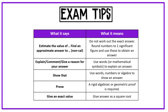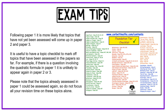If it says 'give an exact value', give the answer as a square root. Our final exam tip is that following paper 1, topics not yet assessed are more likely to come up in papers 2 and 3. It is therefore useful to have a topic checklist to mark off topics that have been assessed. For example, if there is a question involving the quadratic formula in paper 1, it is unlikely to appear again in paper 2 or 3. However, topics already assessed in paper 1 could still be assessed again, so don't focus all your revision time on topics that haven't come up yet.